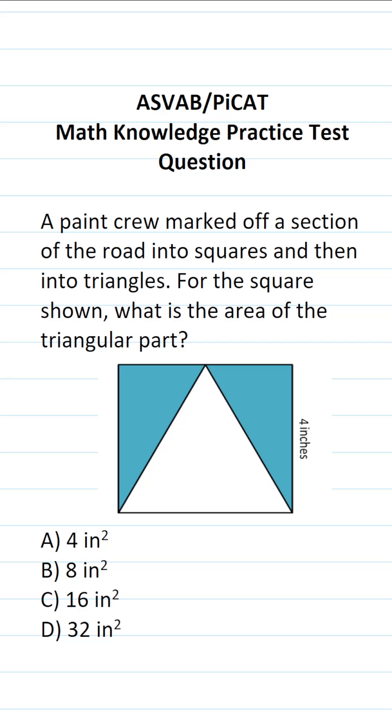This math knowledge practice test question for the ASVAB and PiCAT says, a paint crew marked off a section of the road into squares and then into triangles. For the square shown, what is the area of the triangular part?